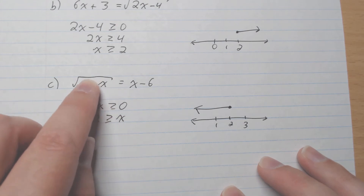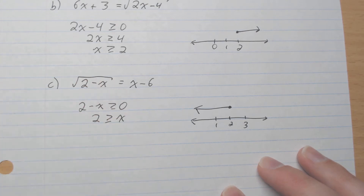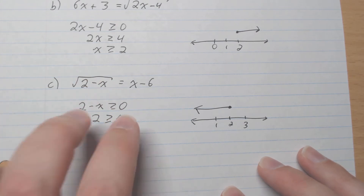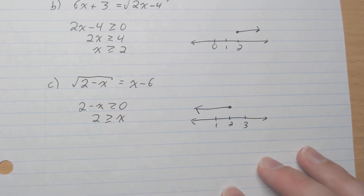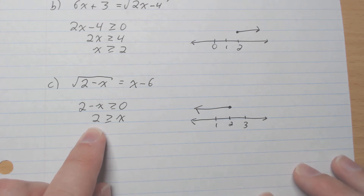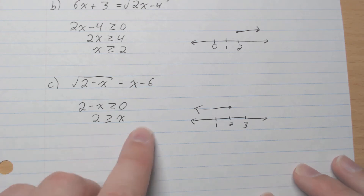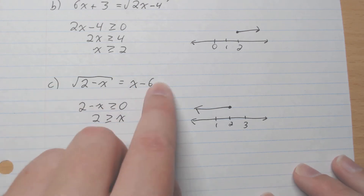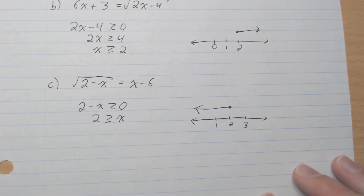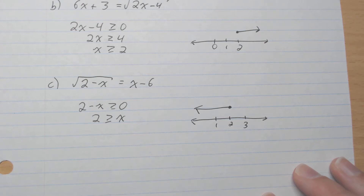For part c, 2 minus x must be greater or equal to 0. Adding x to both sides, x must be less or equal to 2. That is the restriction for this equation, and the number line looks like that.